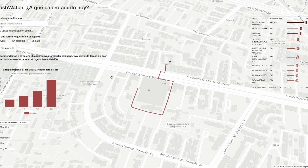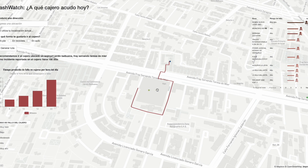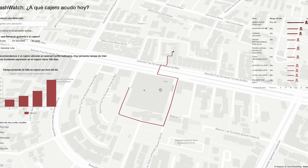The recommendation is based on the time of day, the user's location, and the reports that the ATM has had about failures in its operations. Once the ATM has been selected, the application will show you the route to get to that point, depending on the type of transport that has been chosen.